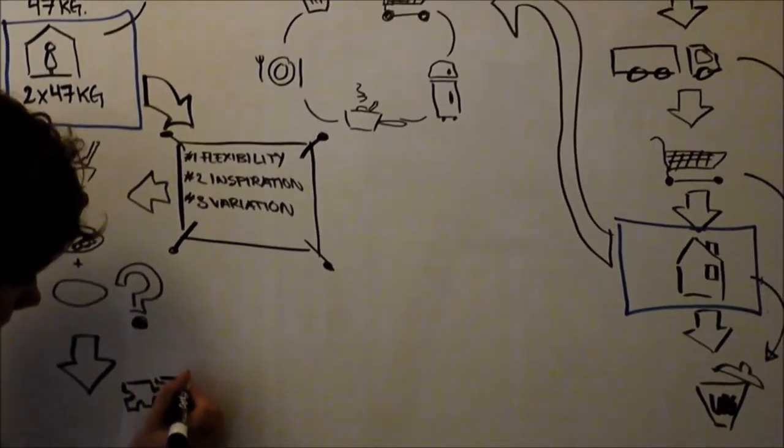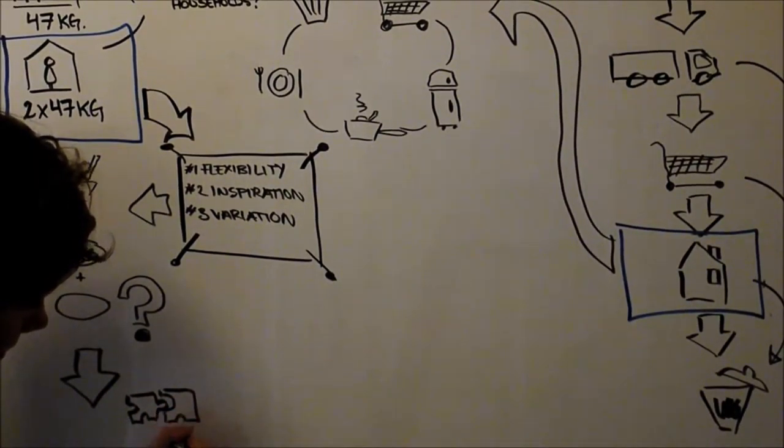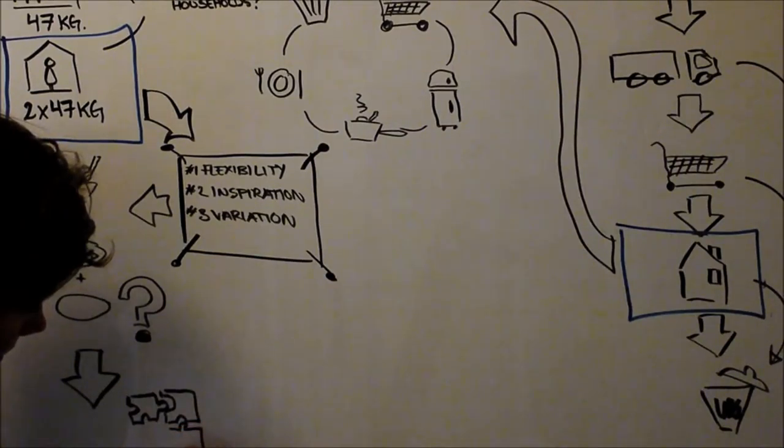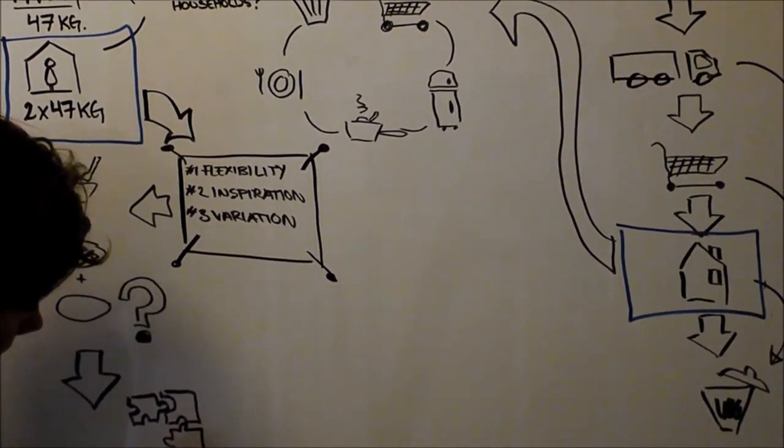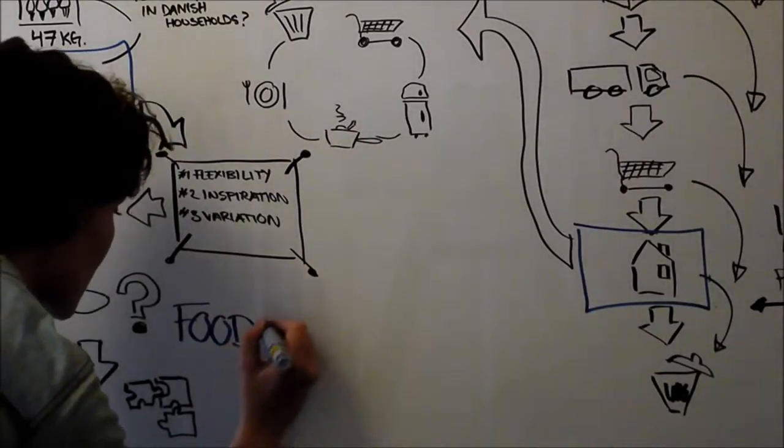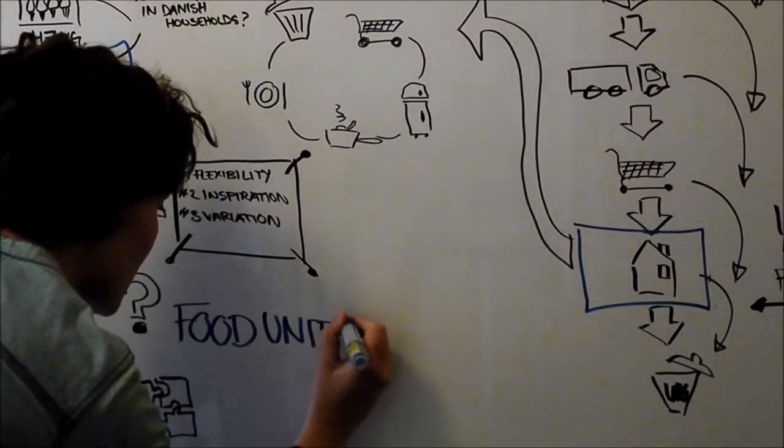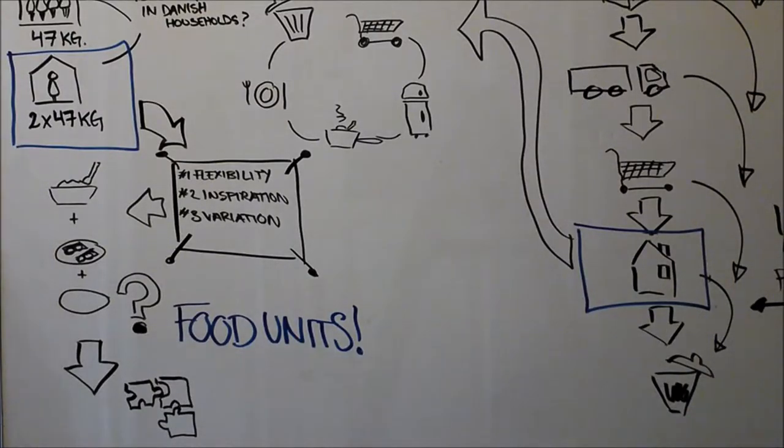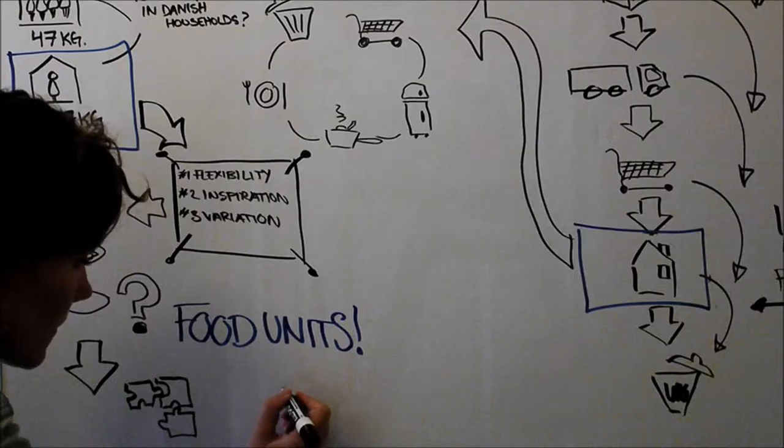These findings made us understand a central part of the food system. People build their meals out of different building blocks, which fit together in what we like to call food units. Food units are very personal and different for each person. They decide how we associate food and what ingredients we think fit together as a meal.